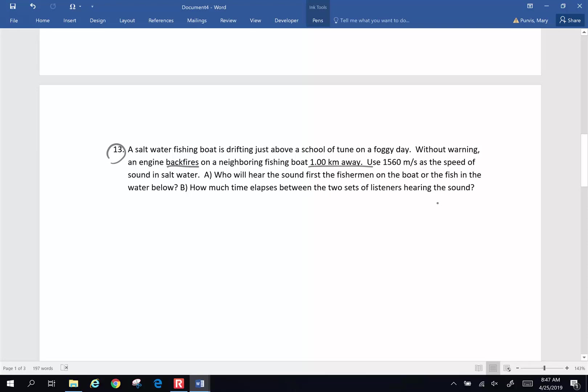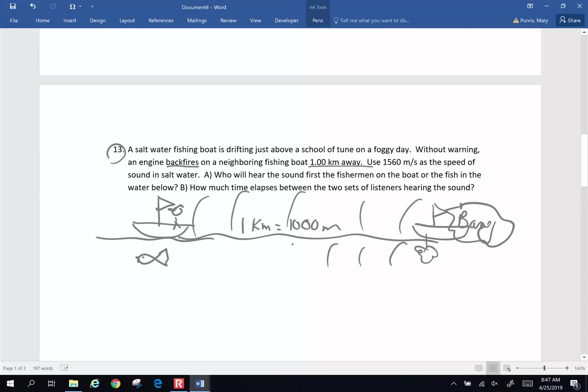So let's kind of draw this picture so we kind of know what's going on. We have our boat. And here's my fancy boat. We've got fish under the boat. And the little fishy under the boat and the fisherman on the boat. And on a foggy day, some distance, one kilometer away. Now, one kilometer, we know, is 1,000 meters away. There is another boat back here that its little engine goes bang and it makes a big noise. And when that engine bangs, the sound waves are going to travel through the air. But because it's in the engine and the engine has a propeller down under the water, those sound waves are also going to travel the same distance, one kilometer, through the water.